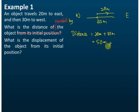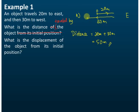The second question is: what is the displacement of the object from its initial position? This is the initial position — the origin. This is the endpoint. Displacement is the shortest distance between the two points. The shortest distance between these two points is 10 meters.